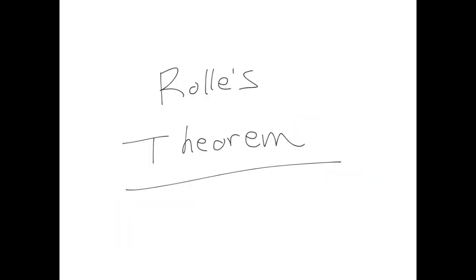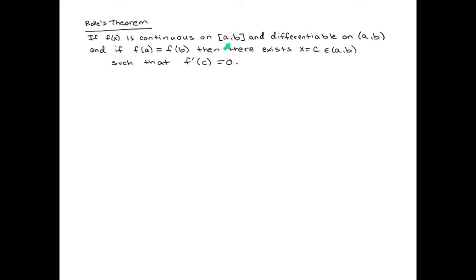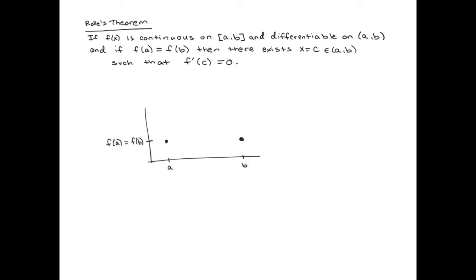The next theorem is called Rolle's Theorem. Rolle's Theorem has a bit more in terms of the hypothesis. In addition to being continuous on [a, b] with a and b included, you also have to be differentiable on the interval without a and b included. You can't be differentiable at a kink in the graph or at the endpoint of an interval, which is why the endpoints are not included for differentiability. And you also have to have the height of the function at a equal to the height of the function at b.